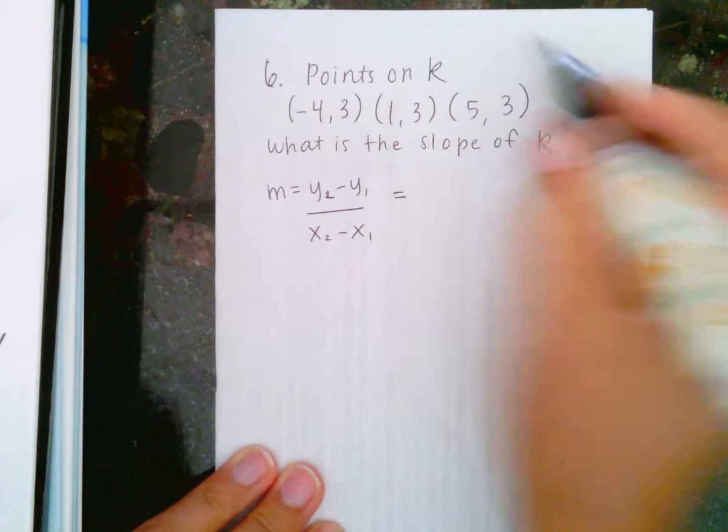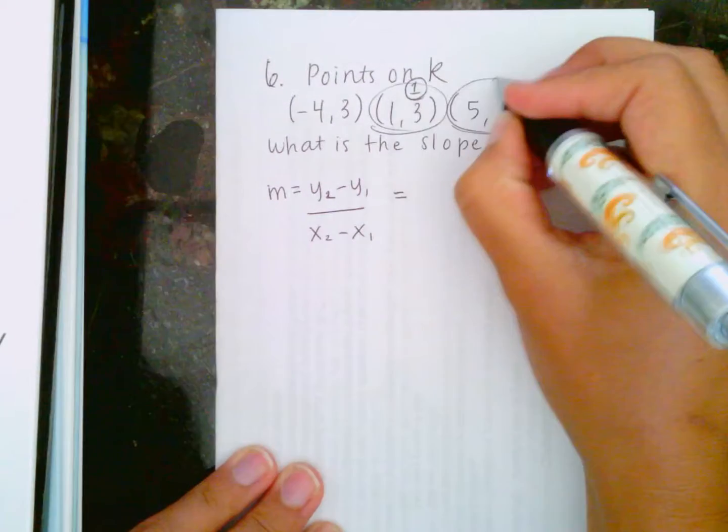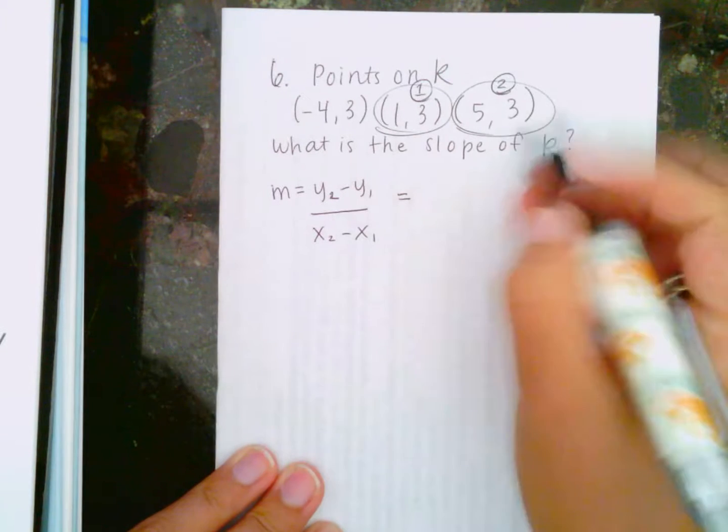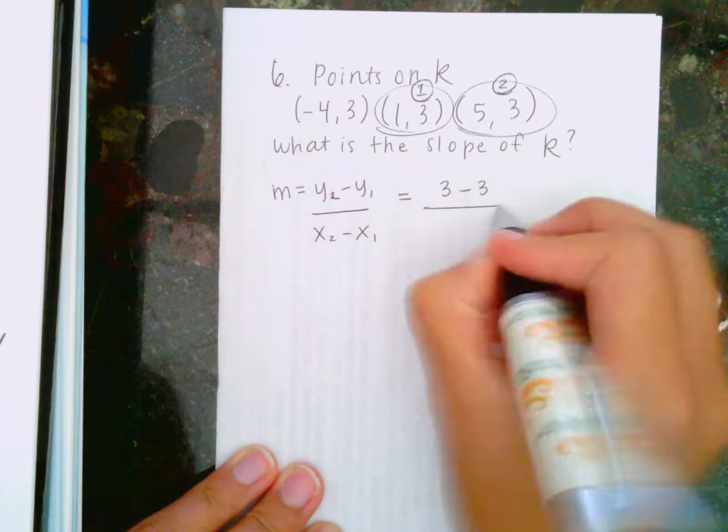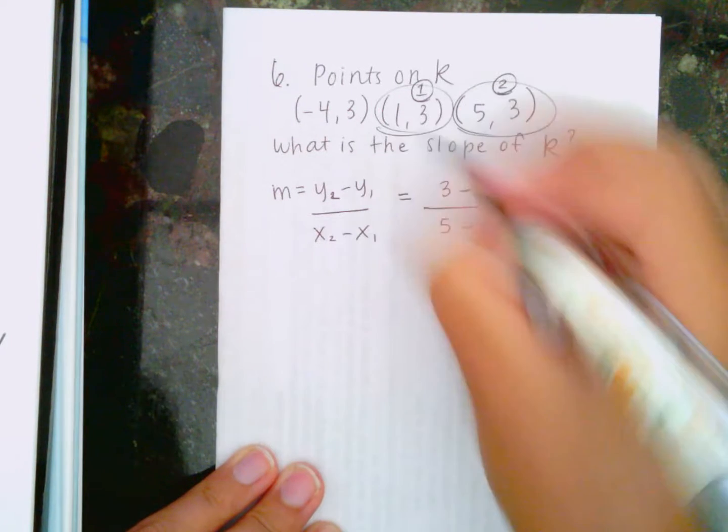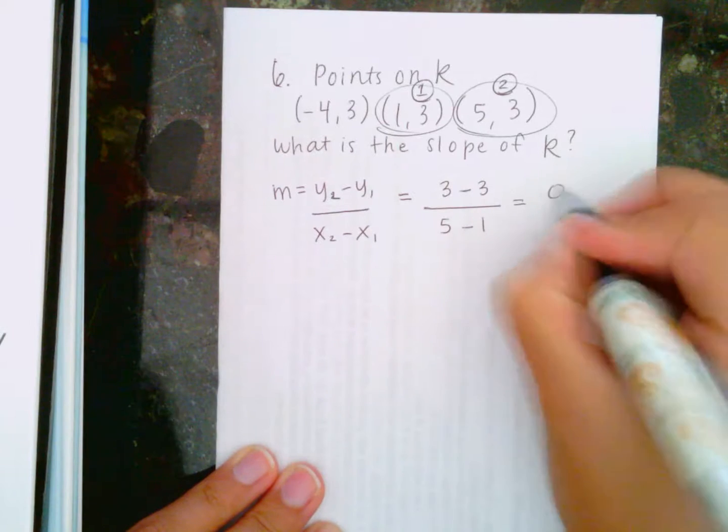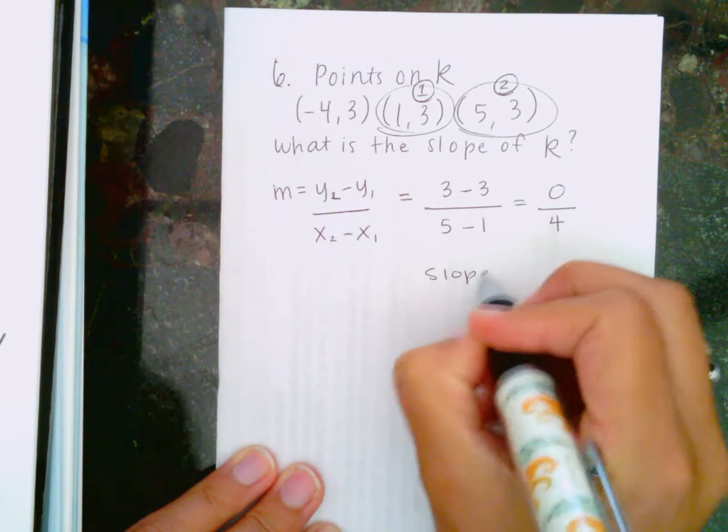So we're going to plug that in. I'm just going to choose this one and this one as my 1 and 2. So my y2 is 3 minus y1 is 3 over x2 is 5 minus x1 is 1. That equals 0 over 4. So my slope equals 0.